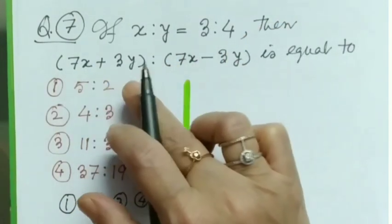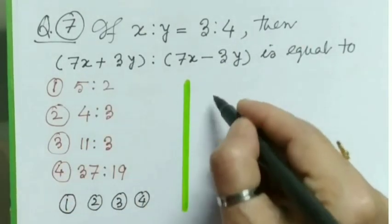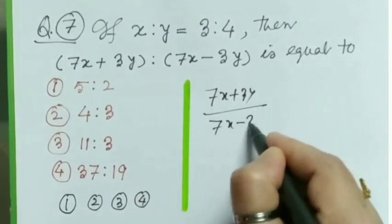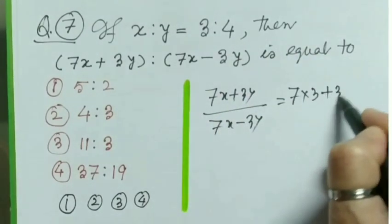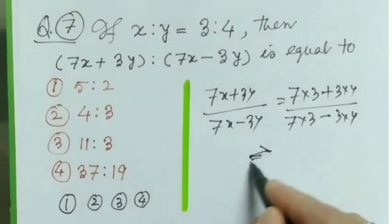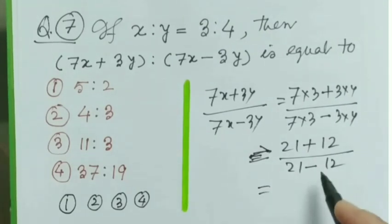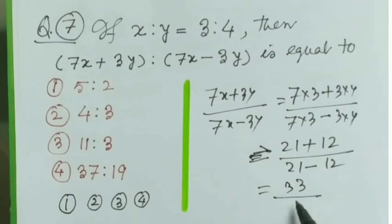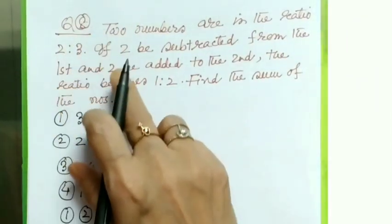Question 7: If x is to y equals 3 is to 4, find 7x + 3y is to 7x − 3y. I simplify by substituting x=3 and y=4: (7×3 + 3×4) ÷ (7×3 − 3×4) = (21 + 12) ÷ (21 − 12) = 33 ÷ 9. Dividing by 3 gives 11:3. So option 3 is the correct answer.